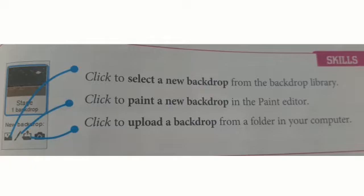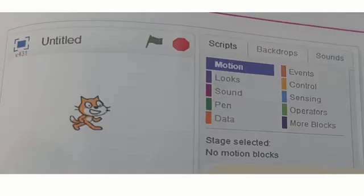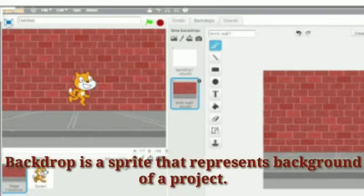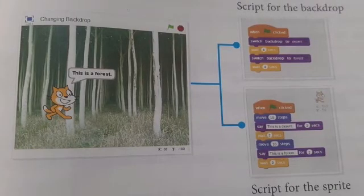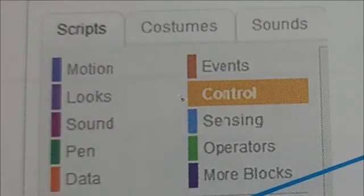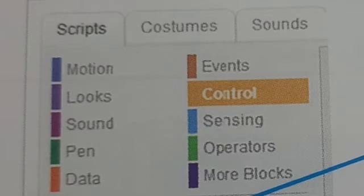We can also upload a backdrop from a folder on our computer. One more thing to note: whenever we make a script for a backdrop, there are no instructions in the motion block, because the backdrop cannot move. In short, the backdrop is a sprite that represents the background of a project. On page number 105, two scripts are written — one for the backdrop and one for the sprite — so we have to make separate scripts for the backdrop.